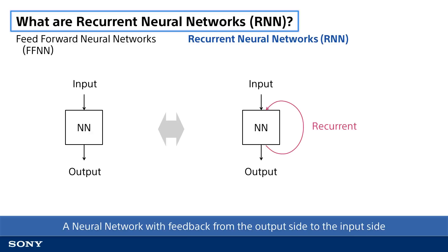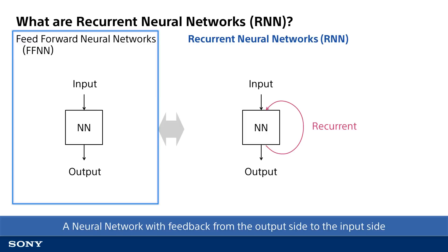First, let's discuss what exactly recurrent neural networks are by comparing them to feed-forward neural networks, which were discussed in previous videos as an image recognition solution. With feed-forward neural networks, data is processed in only one way from input to output. In this neural network, an image, for example, is input and then processed in sequence. The end result of the processing is the output of an image recognition result.